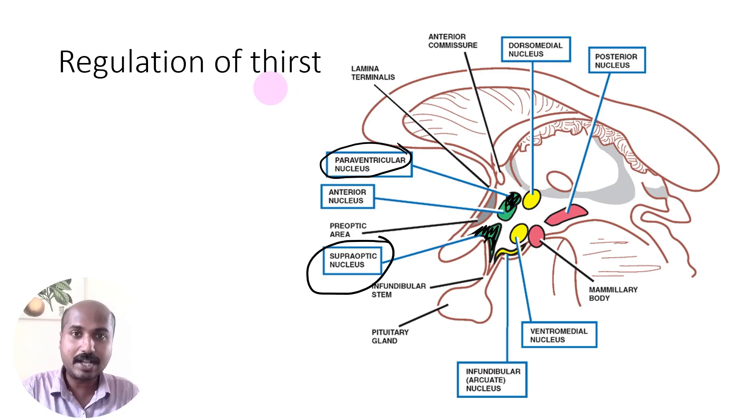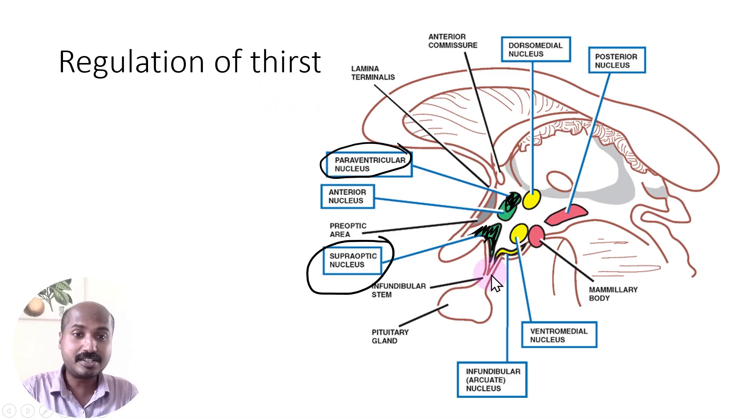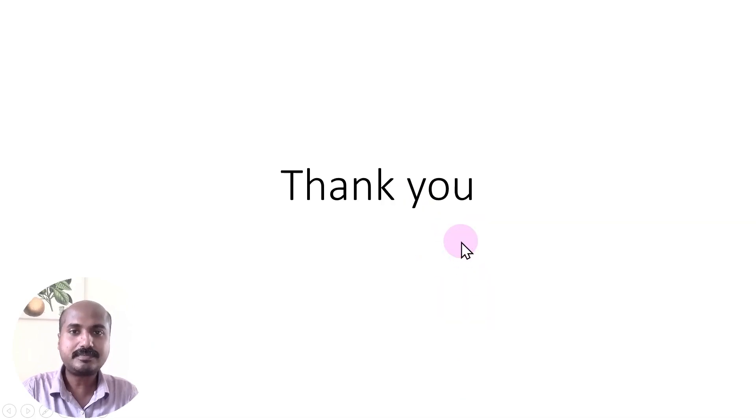So that was about the lamina terminalis and the structures in the anterior part of the third ventricle. Thank you so much.